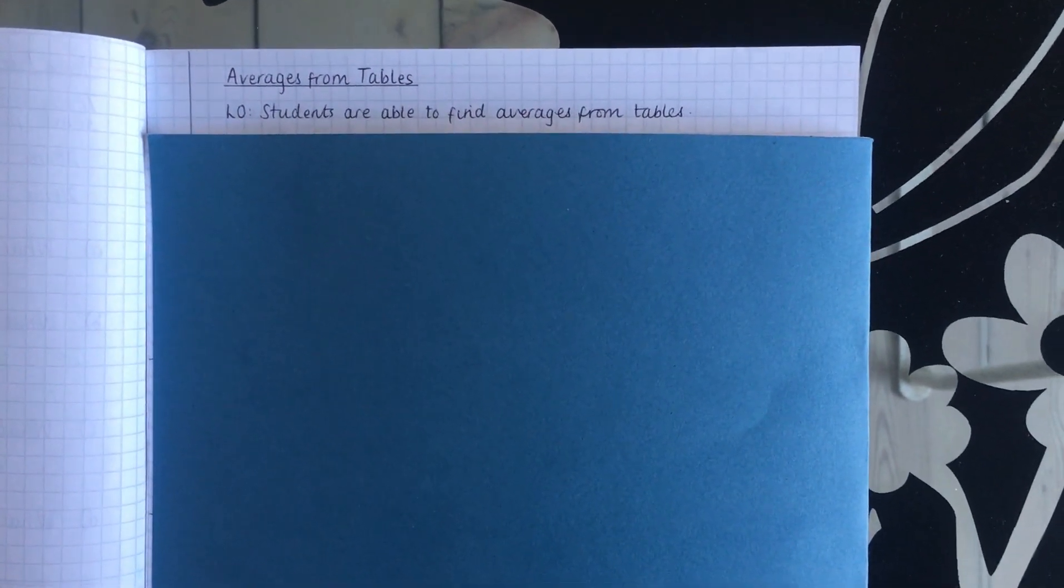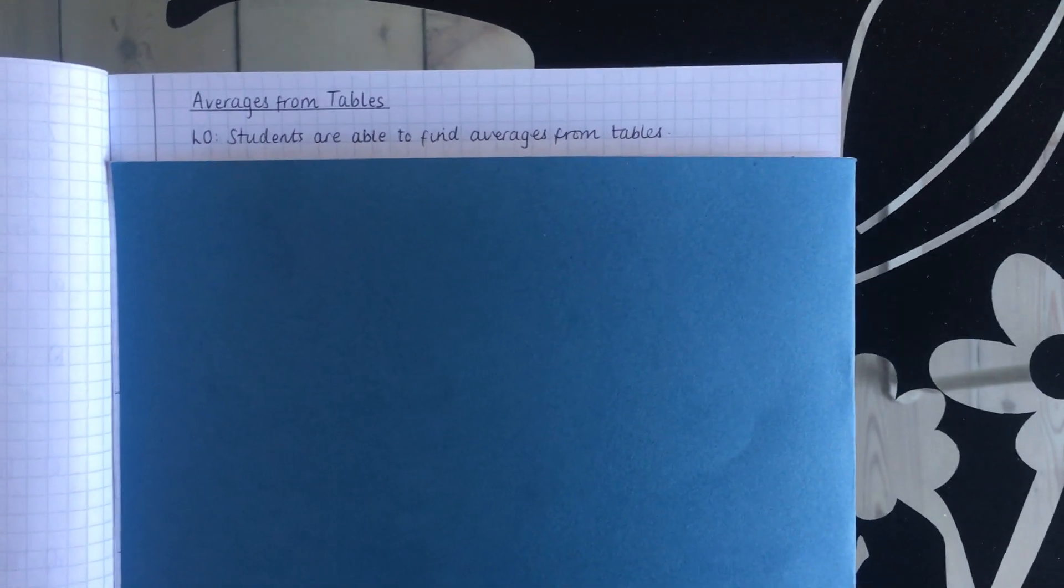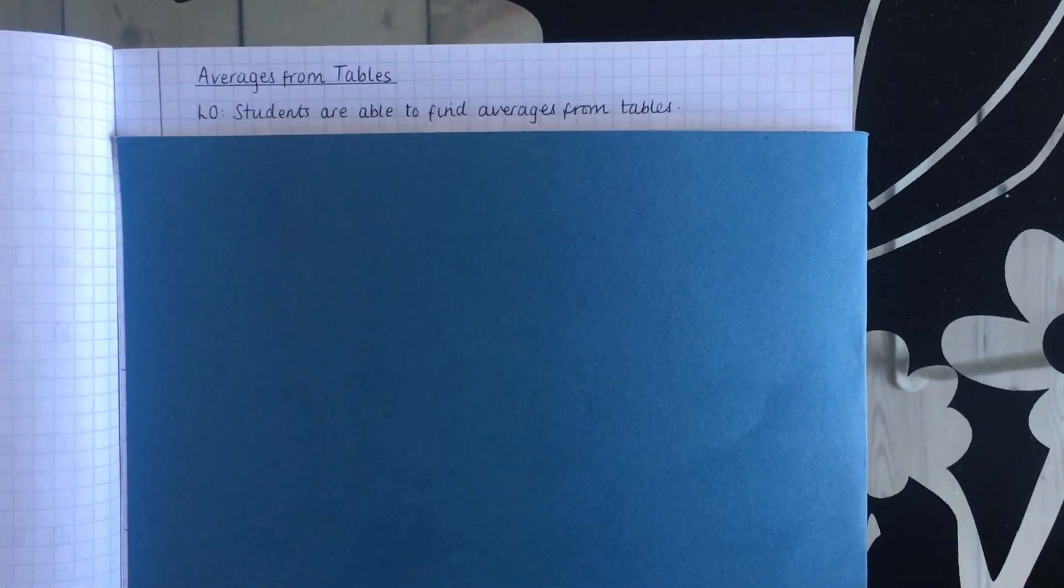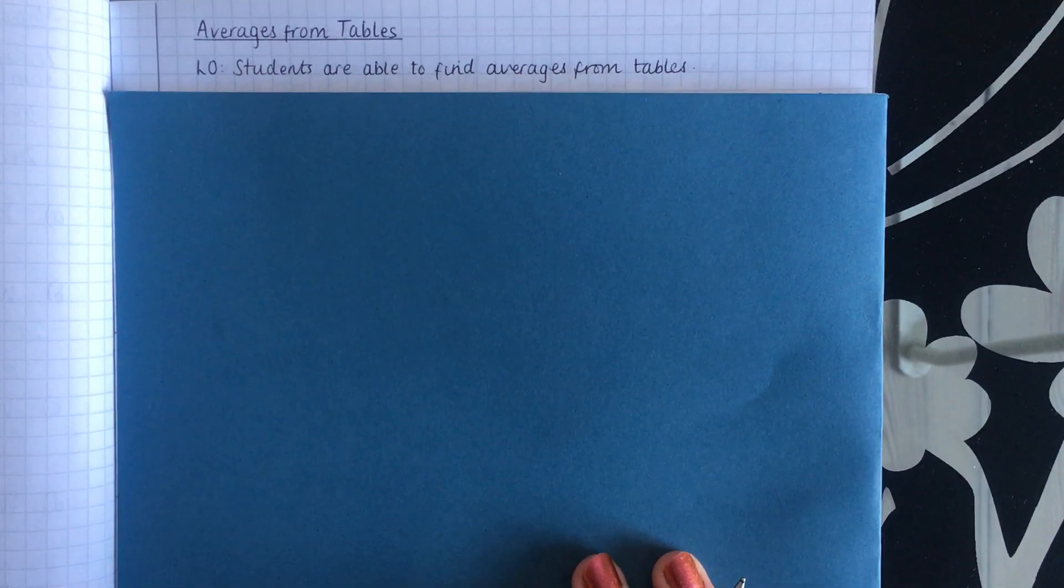Okay, so now we're going to be looking at averages from tables. This is when the data is in a table rather than being in a list, and so there are some differences to the methods that we need to use.